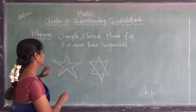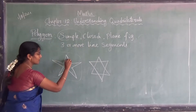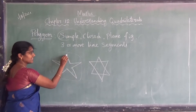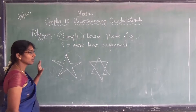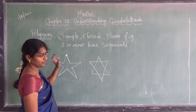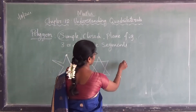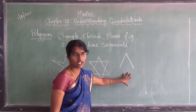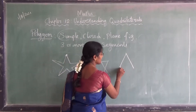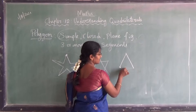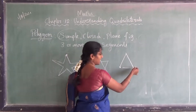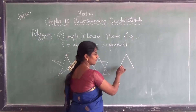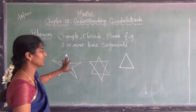And then, 'closed.' Here you can see this is the starting point of the star, and it ends at the same point — this we call a closed figure. If I draw like this and it doesn't join back, it is not a closed figure. If I touch the starting point, then only we call it a closed figure.